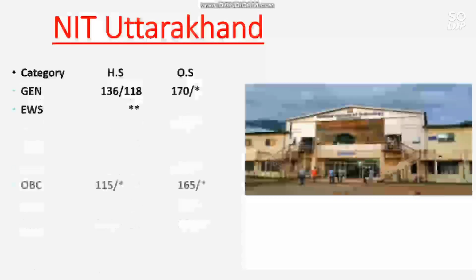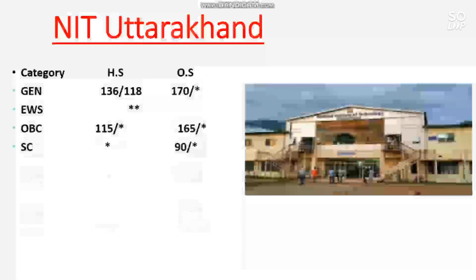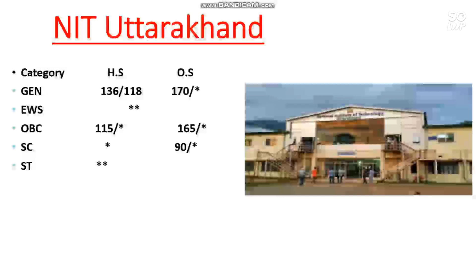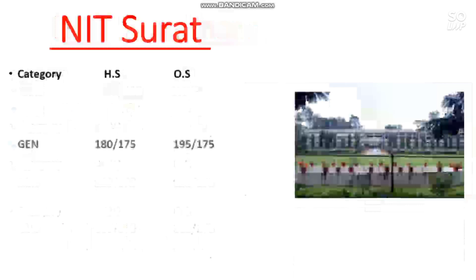For NIT Uttarakhand: EWS — no seat reserved; OBC, 165 marks; SC, 90 marks; and ST — no seat reserved. Wherever there is no seat reserved for a particular category, you can get the seat through CRL marks, but you will not get the benefit of reservation where a seat is not reserved. The next is NIT Surat.